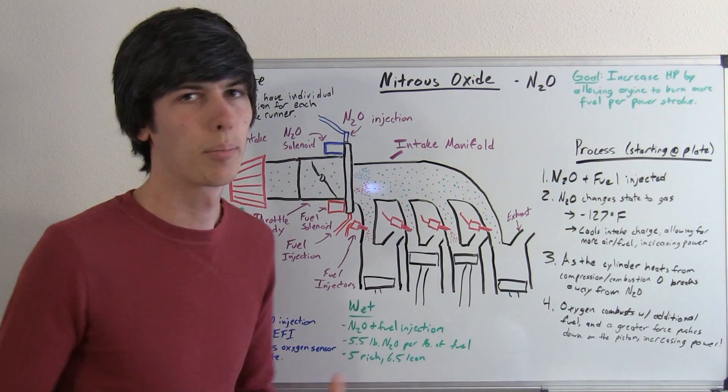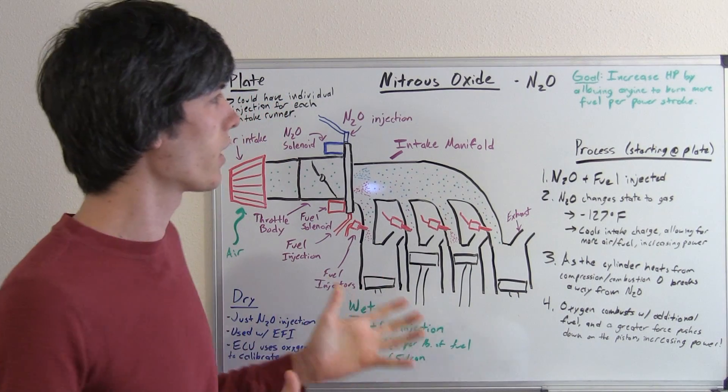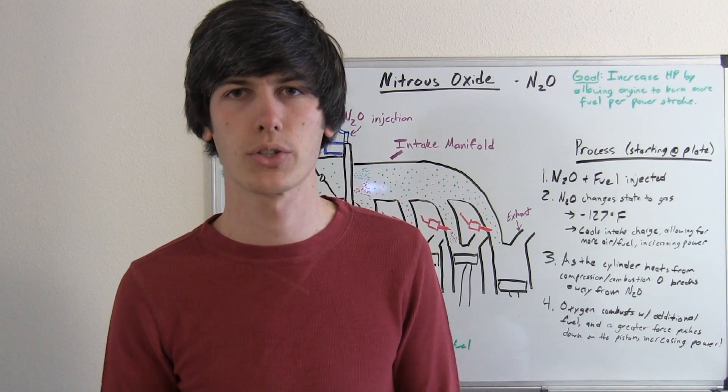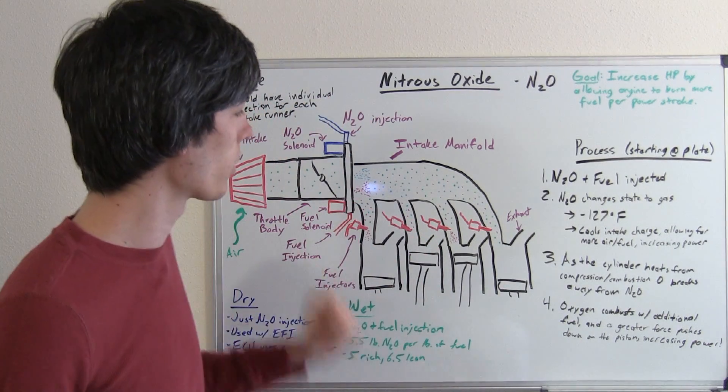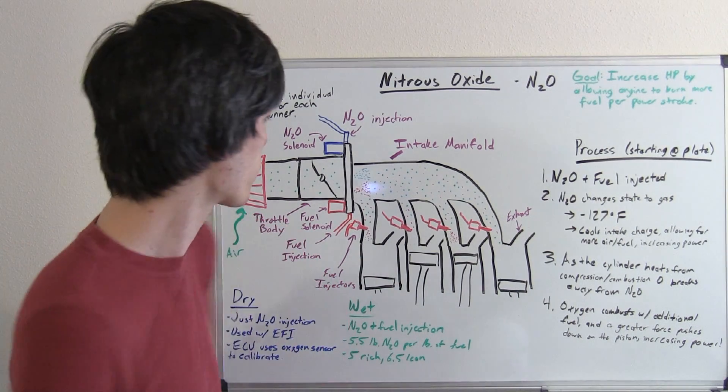So nitrous oxide. The purpose of a nitrous system is to increase horsepower. Now how it does this is by allowing the engine to burn more fuel per power stroke. How does it allow the engine to burn more fuel? Well it increases the amount of oxygen inside of the cylinder during each power stroke.